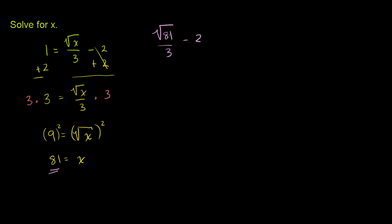Square root of 81—we're taking the principal root, the positive square root. So we're only going to think about the positive square root, which is 9. 9 over 3 minus 2. 9 over 3 is clearly 3. 3 minus 2 is indeed equal to 1. So x equals 81 is indeed the solution for this radical equation.